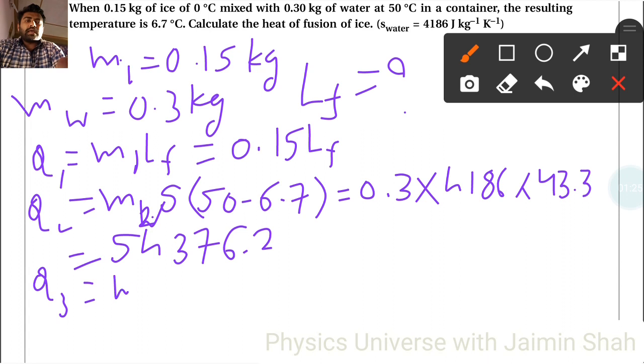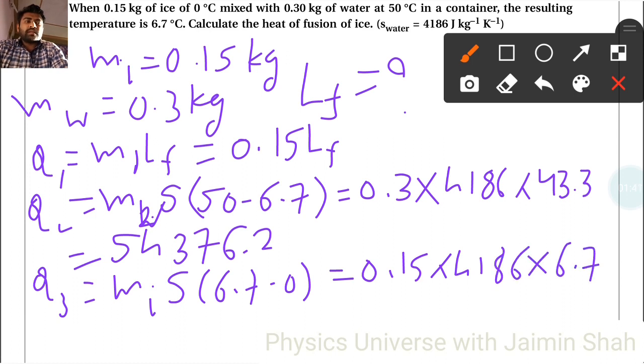Then q3 that we have to find, again mi times s, here now 6.7 minus 0, to let that water become ice. So it equals mi 0.15 into s 4186 into 6.7. Now again calculation, that is 4206.1.